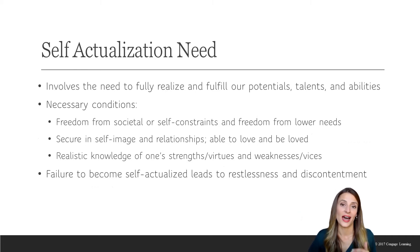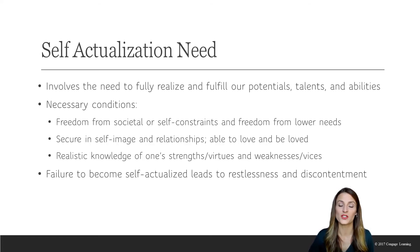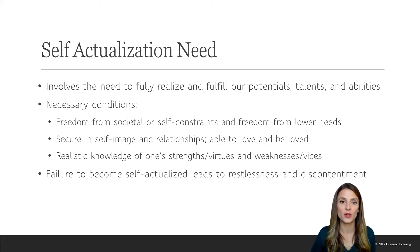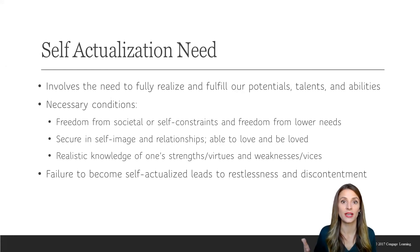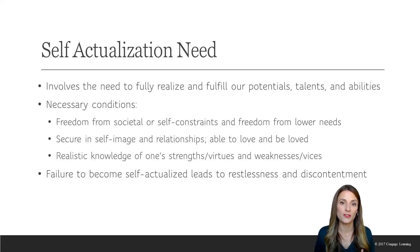Self-actualization is the highest need in his hierarchy, but it's also the weakest need, and the one that few people are able to satisfy. It involves the actualization, the realization, and the achievement of our greatest potential. Maslow believed that everyone has the potential to be satisfied at this level, but that only 1% of the population is dominated by this level. In his mind, it was extremely rare for individuals to self-actualize.